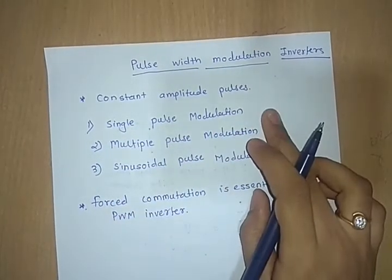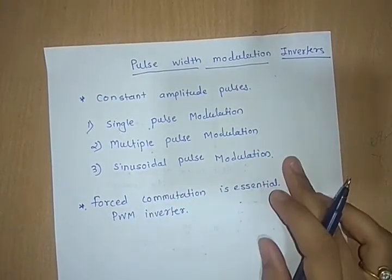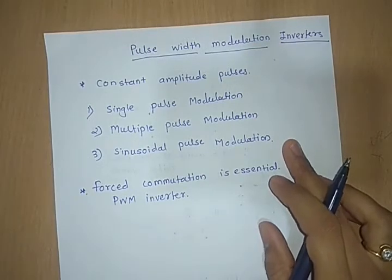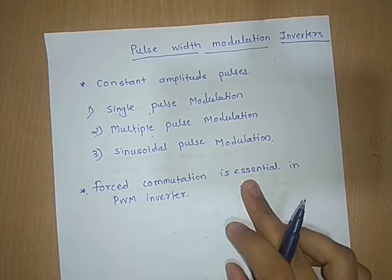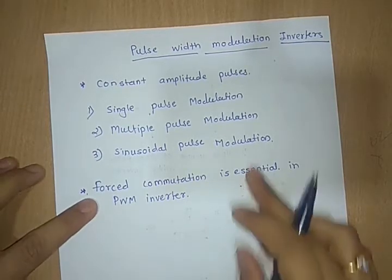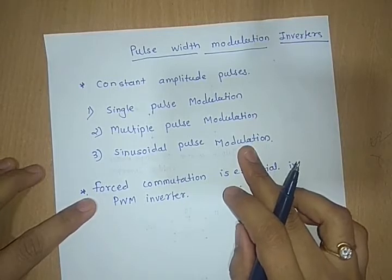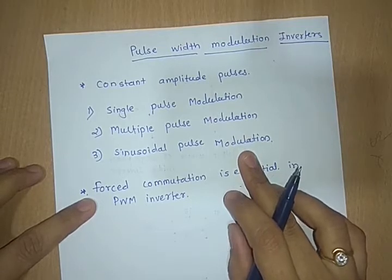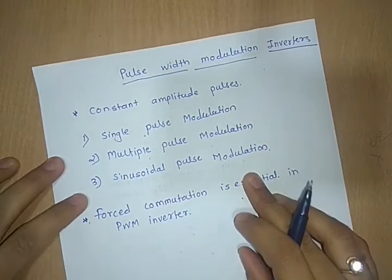The first one is single pulse modulation, the second one is multiple pulse modulation, and the third one is sinusoidal pulse modulation. In a PWM inverter, forced commutation is essential. These three methods differ from each other in the harmonic content present in their respective output voltages. The choice of a particular PWM technique depends upon the permissible harmonic content in the output voltage.